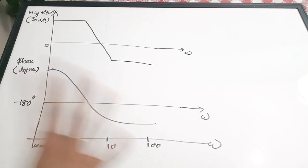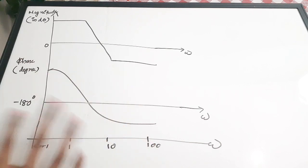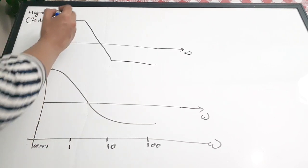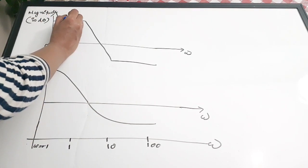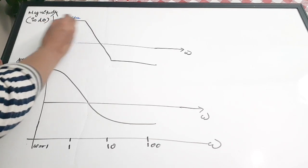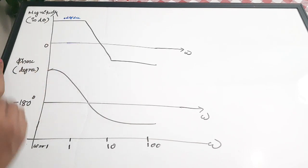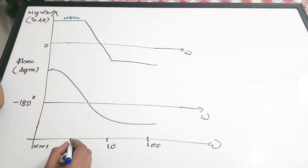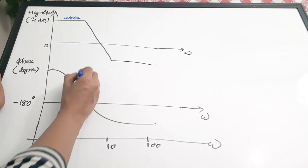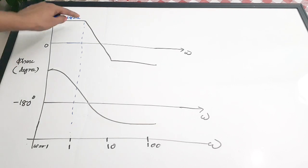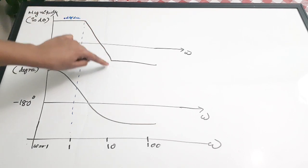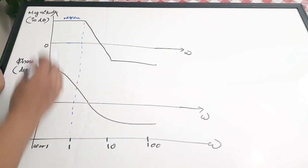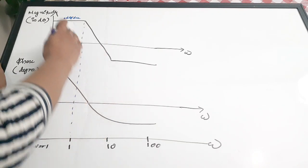This is a rough figure drawn for explaining the terms. Consider this is the initial line having a slope of 0 dB per decade — it is a parallel line. After that at omega equal to 1, the line goes down, meaning the slope becomes negative.